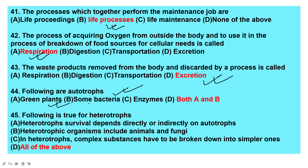Which of the following is true for heterotrophs? Heterotrophs' survival depends directly or indirectly on autotrophs. Heterotrophic organisms include animals and fungi. In heterotrophs, complex substances have to be broken down into simpler ones. All of the above — that is the answer.